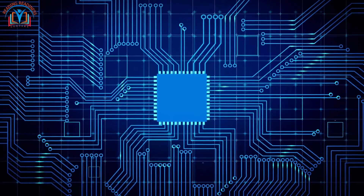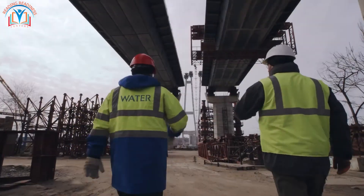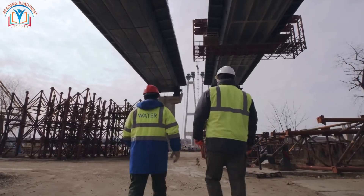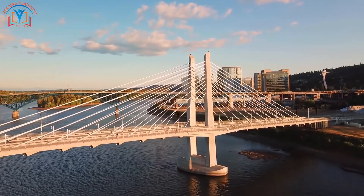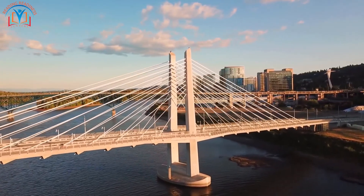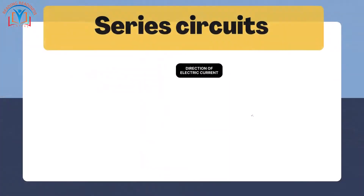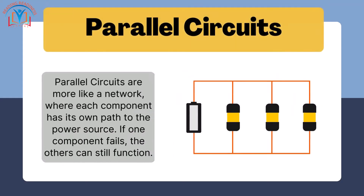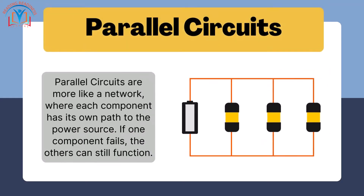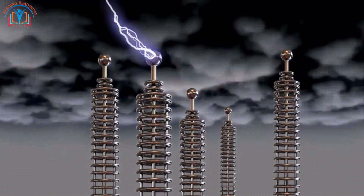If one component in a parallel circuit breaks, the others continue to work. Imagine you're building a bridge with multiple arches — if one arch breaks, the whole bridge might collapse. But if you build multiple bridges side by side, if one arch breaks the others can still support the weight. That's similar to how parallel circuits work. Series circuits are like a chain where each link depends on the others; if one link breaks, the whole chain falls apart. Parallel circuits are more like a network where each component has its own path to the power source, so if one fails, the others can still function.